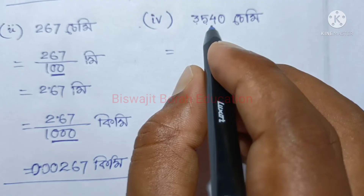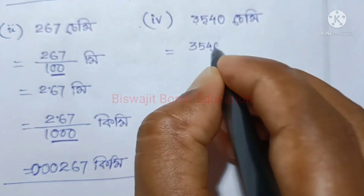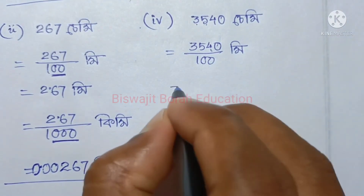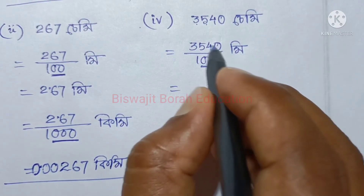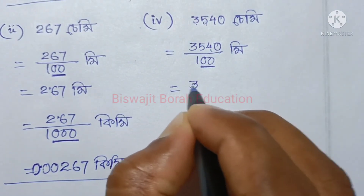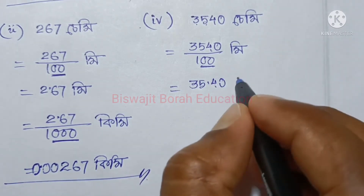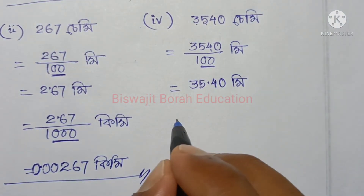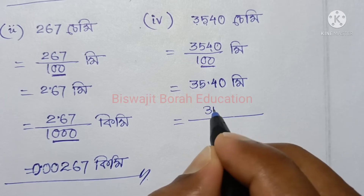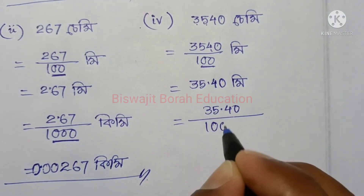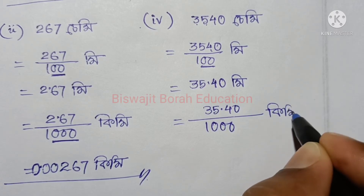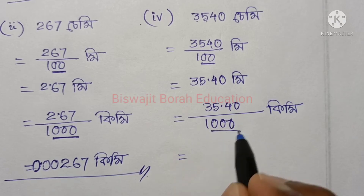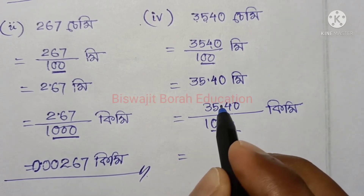So 3,540 is 1 meter, so 3,540 is 1 meter. The meter is 0, the meter is 0, and the meter is 0.